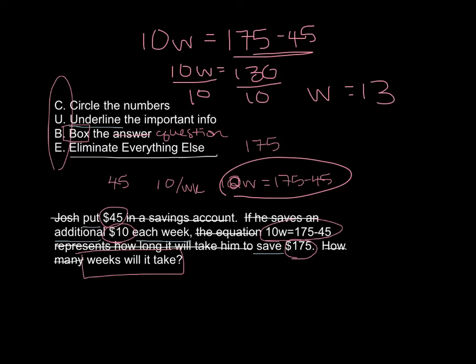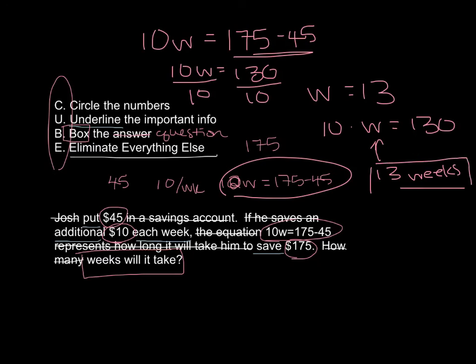That's how many weeks it's going to take. Another way to think about it: 10 times what number equals 130? We know that 13 works easily, so 13 weeks is our answer. And that is how we use the cube method. Now work on your worksheet and use the cube method to solve the remaining problems. Thank you.